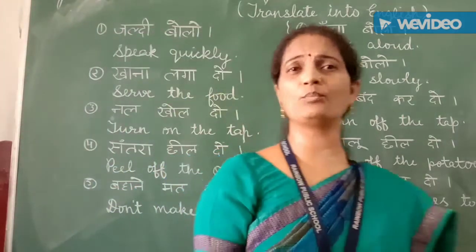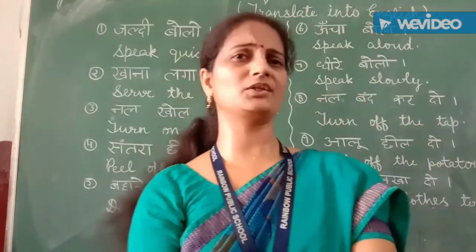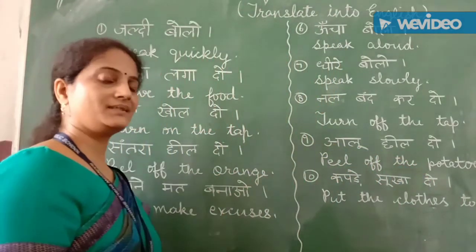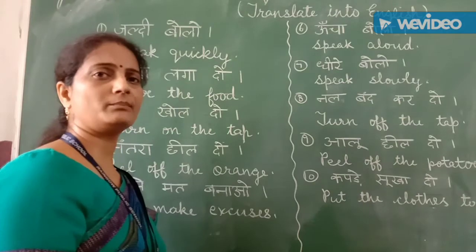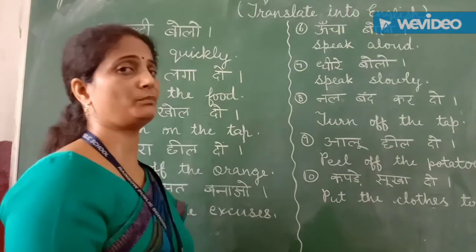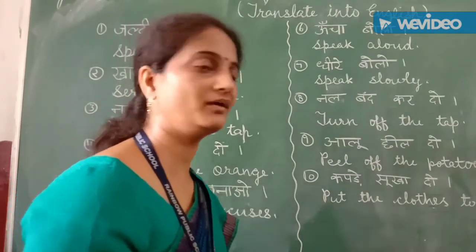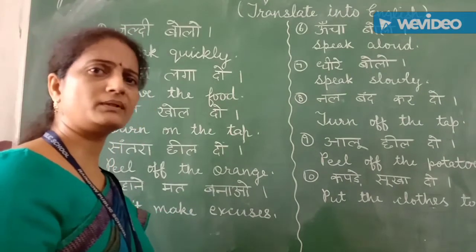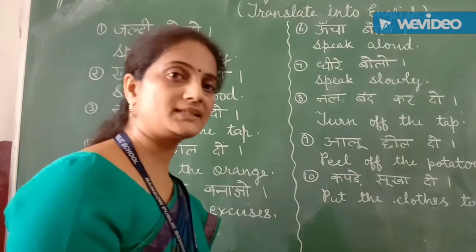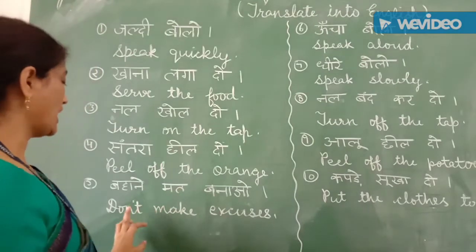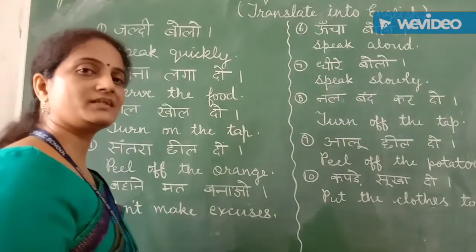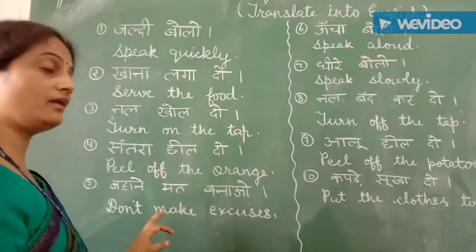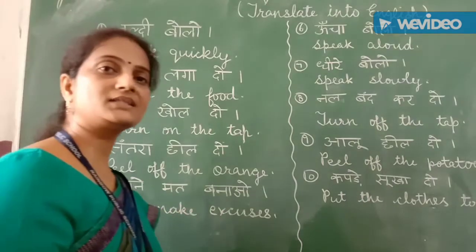Kids, whenever you are not hungry, you make excuses to your mother — 'Mamma, mujhe bhoog nahi hai.' When the vegetable you like is not there, what do you do? You make excuses: 'Mujhe bhoog nahi hai, mere pet me dard ho raha hai.' So what can you say in English to stop that? Don't make excuses. Okay? Read again: don't make excuses.